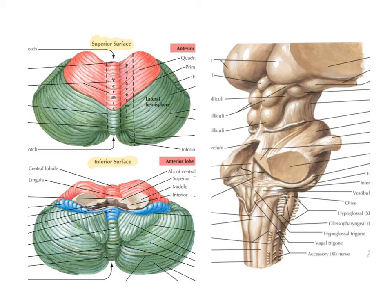Another important region to be aware of is this cavity here, which is the fourth ventricle. The fourth ventricle is roughly pyramidal in shape and sits sandwiched underneath the cerebellum.